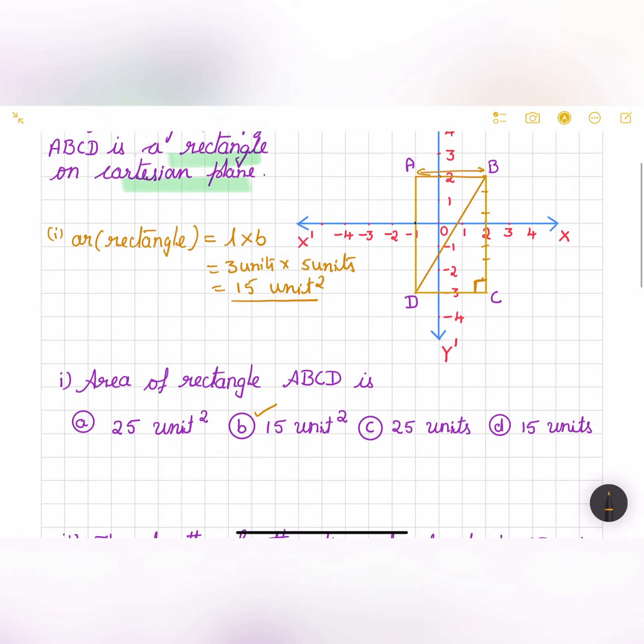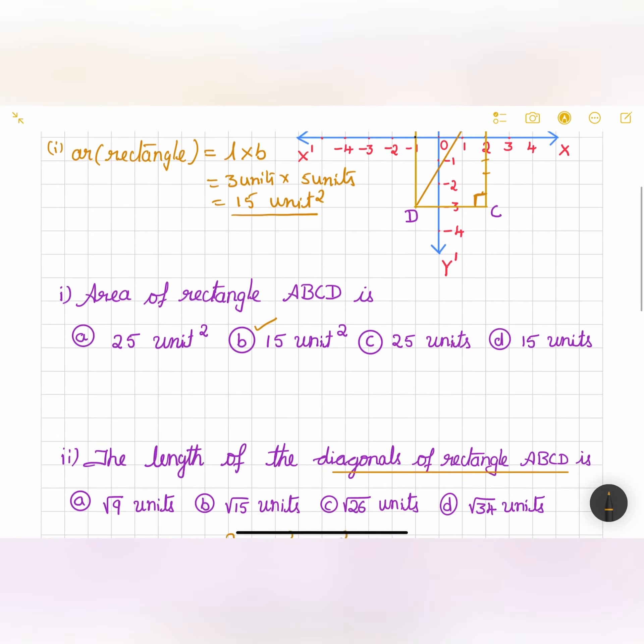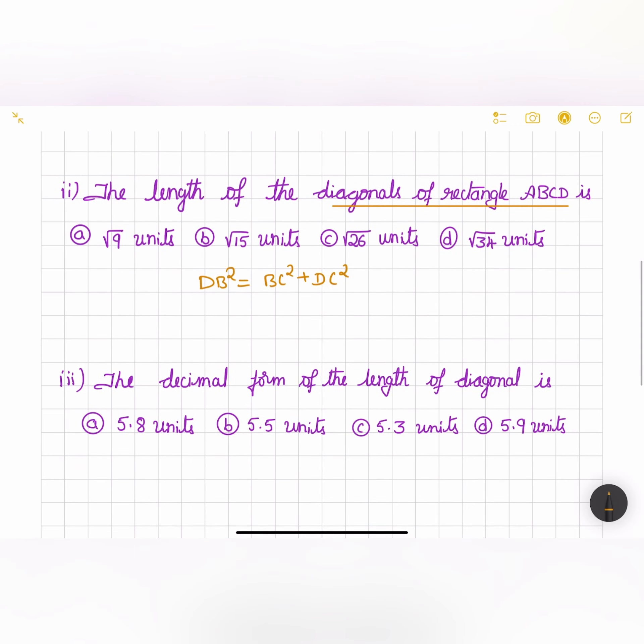Now BC is equal to five units. So five squared plus three squared. That is equal to 25 plus 9. So DB squared will be equal to 34. And DB will be equal to square root of 34 units. So the correct option is option D.